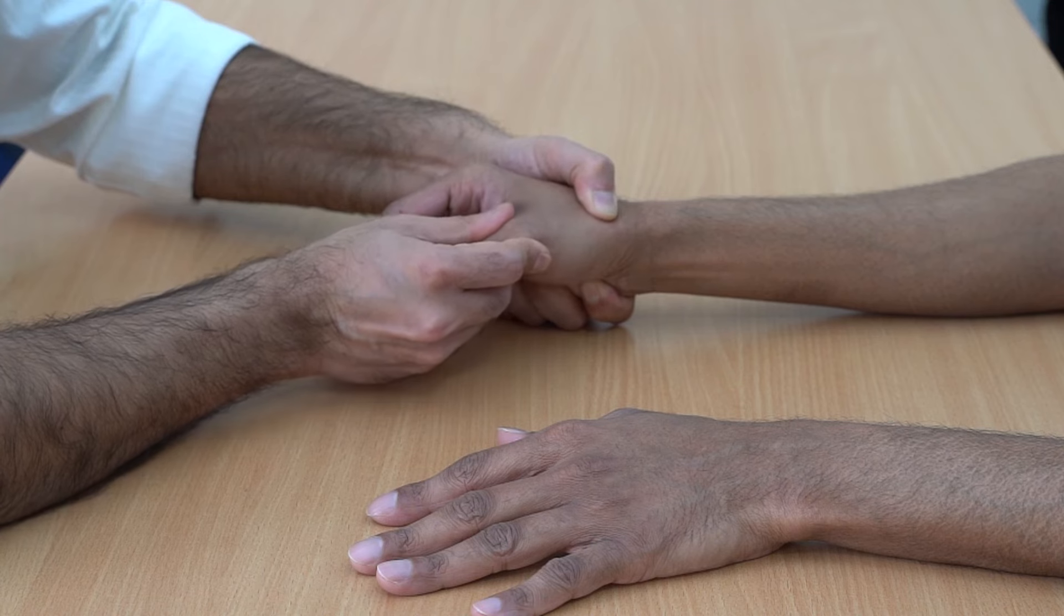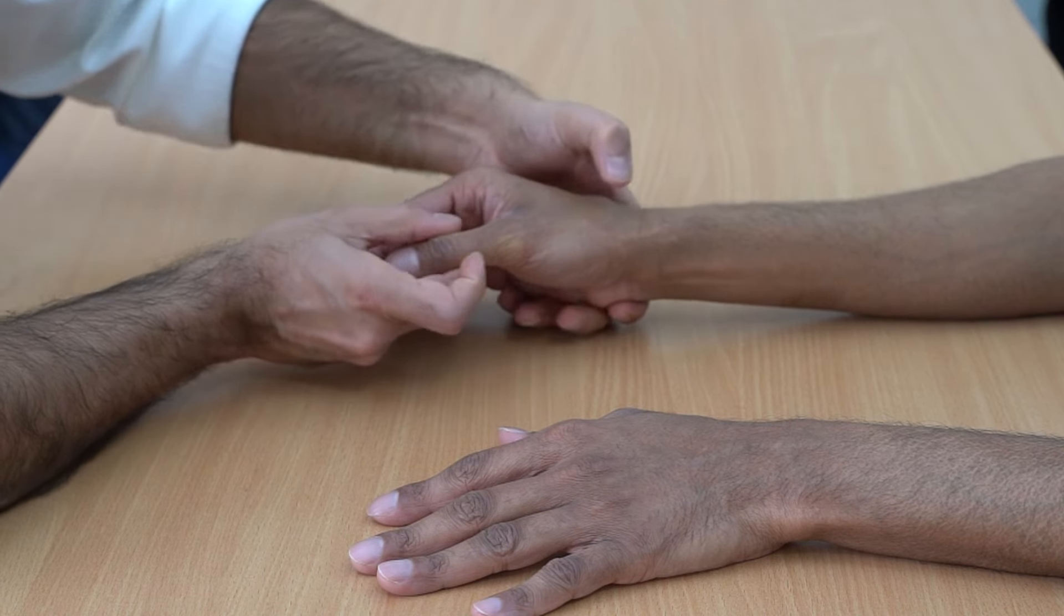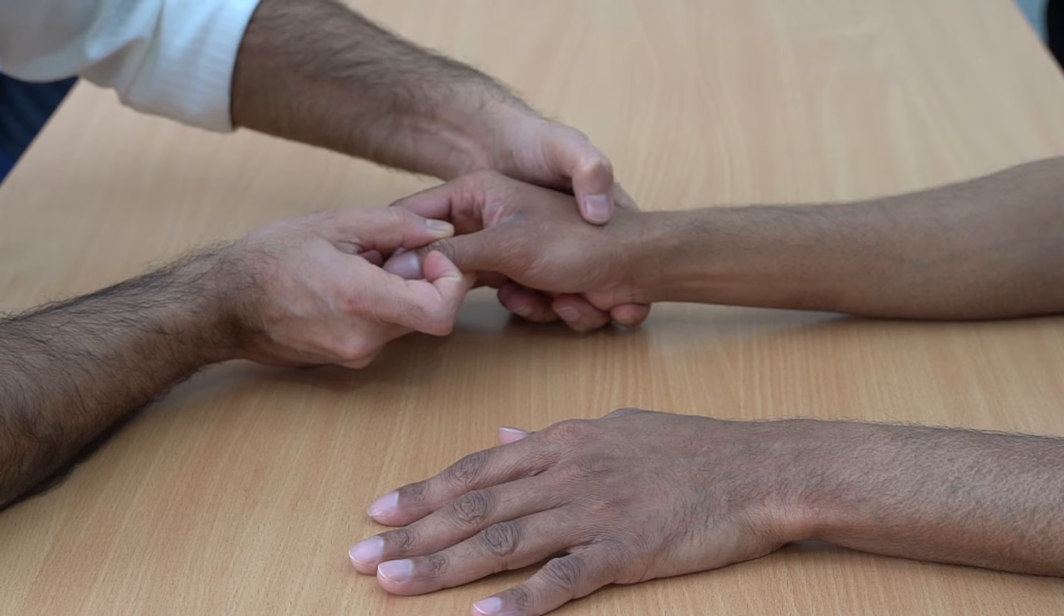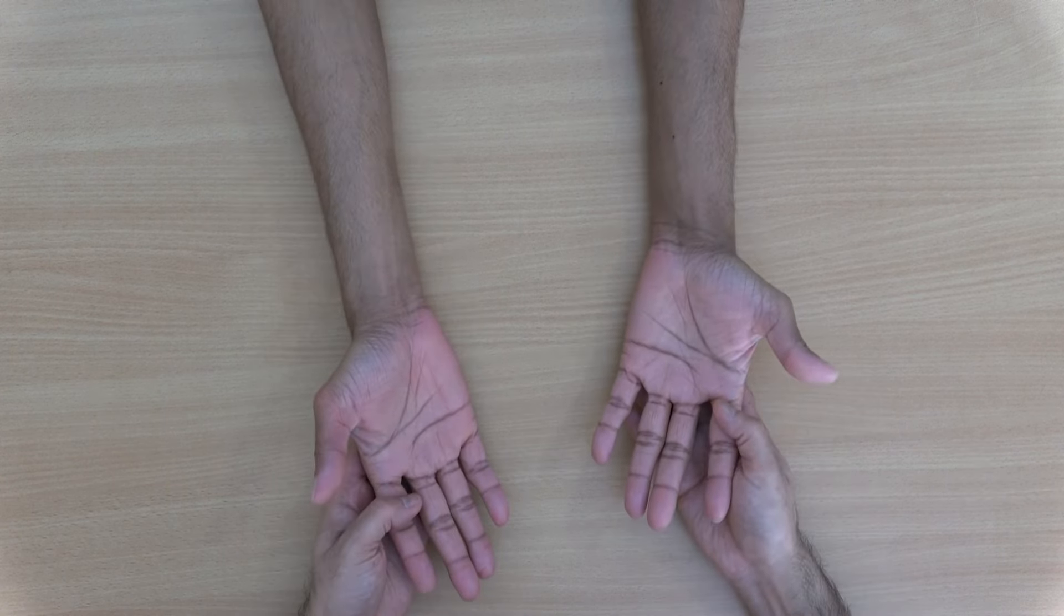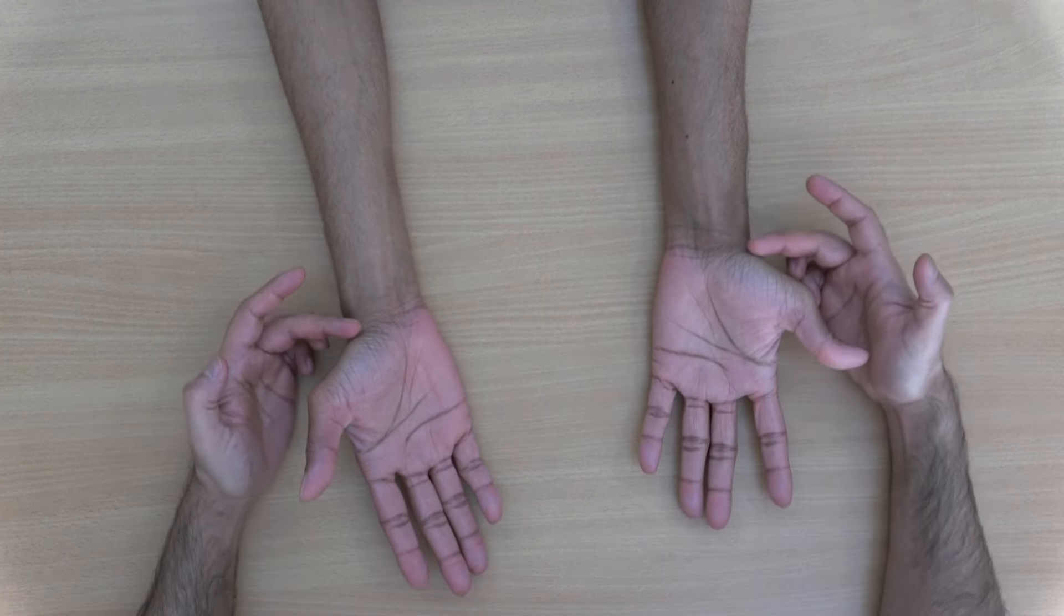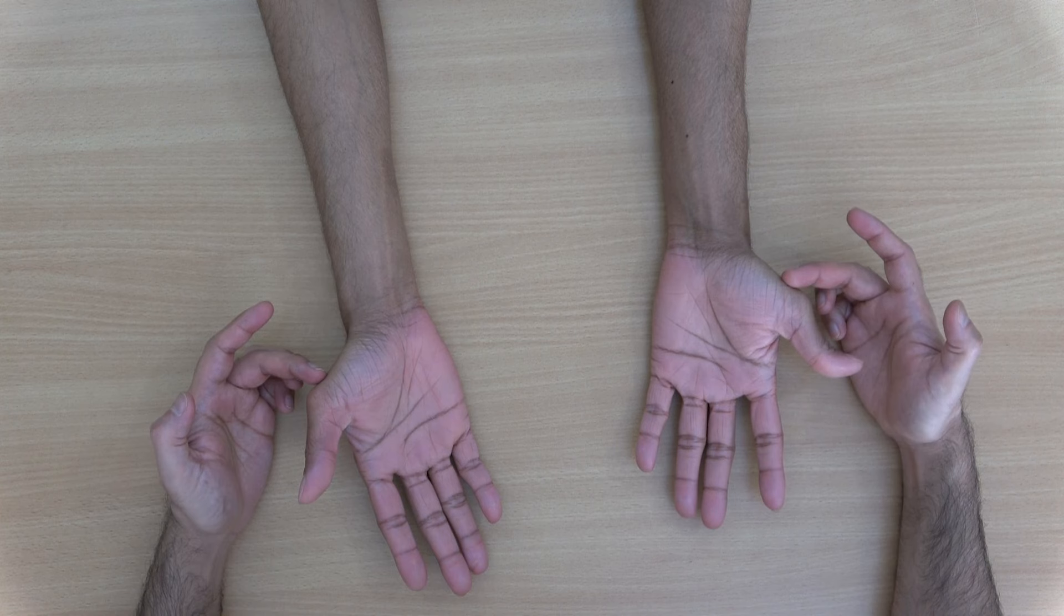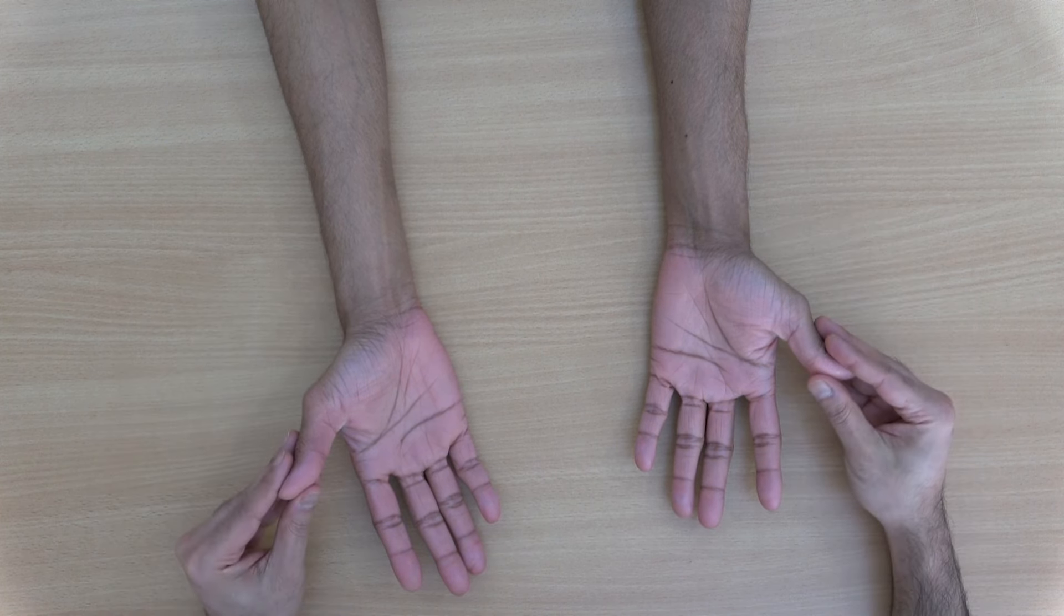That will be a positive test for arthritis in the base, that is CMC joint and also the next joint which is the STT joint. We can also do x-rays to confirm our diagnosis of arthritis here and then treat it accordingly. Thank you.